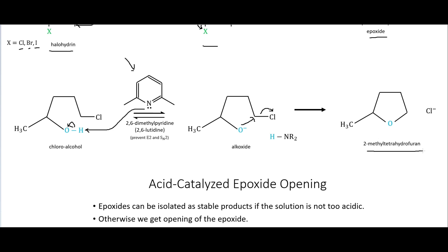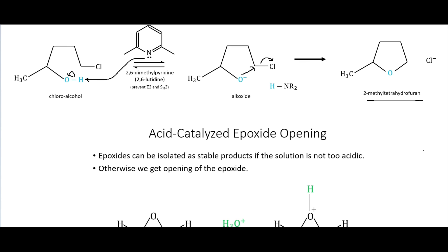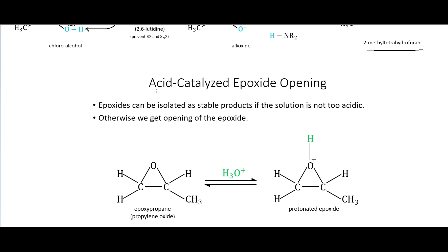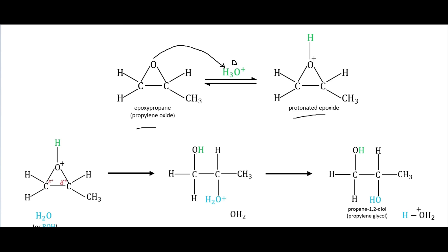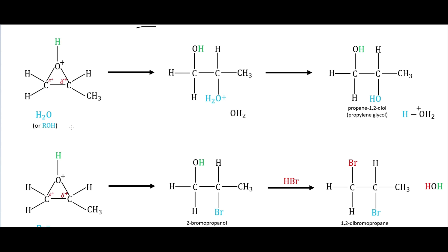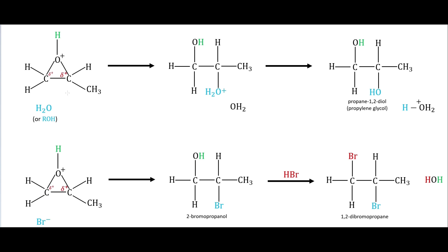We could do this as well with epoxides. Another bit of review from our alcohol videos is acid-catalyzed epoxide opening. We have this epoxide right here. This will take a hydrogen from the acid, and the electrons go to that oxygen, so we end up with this protonated epoxide. Then we can have this water or an alcohol come in, and it's going to go after the more substituted carbon right there. These electrons go to that oxygen. We then have the water take that hydrogen right there, deprotonating it, and we end up with propane-1,2-diol or propylene glycol.